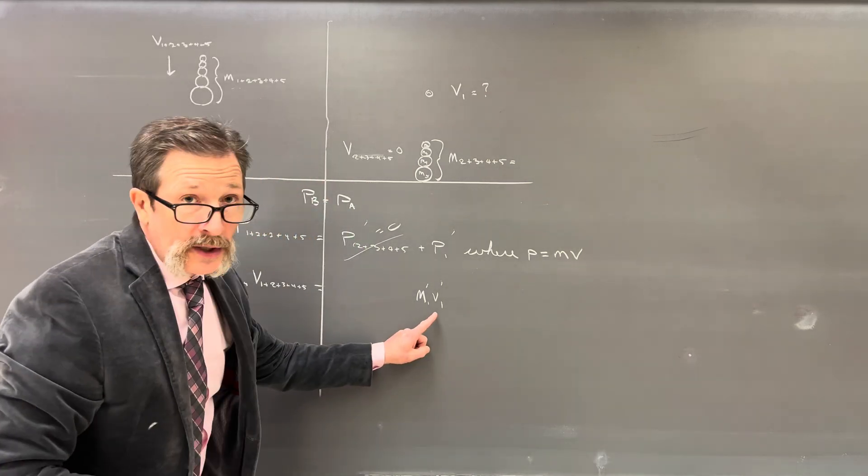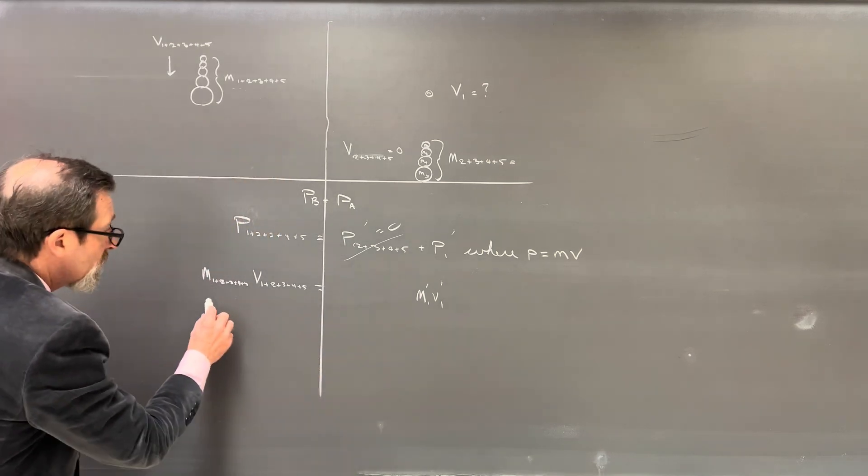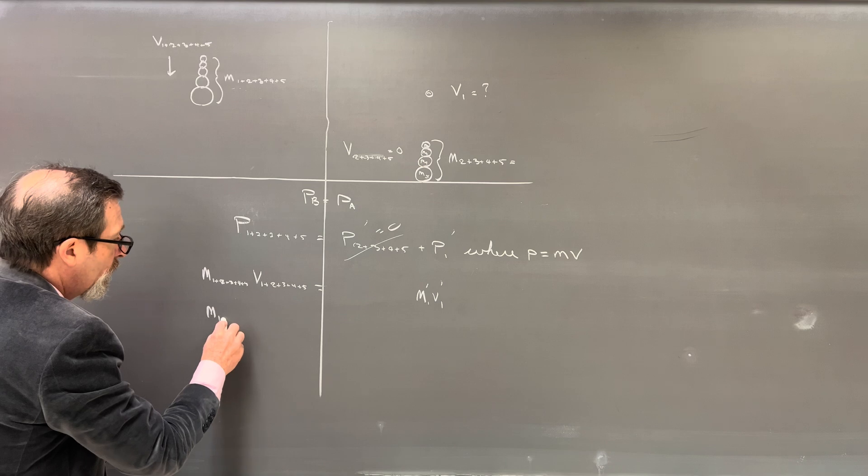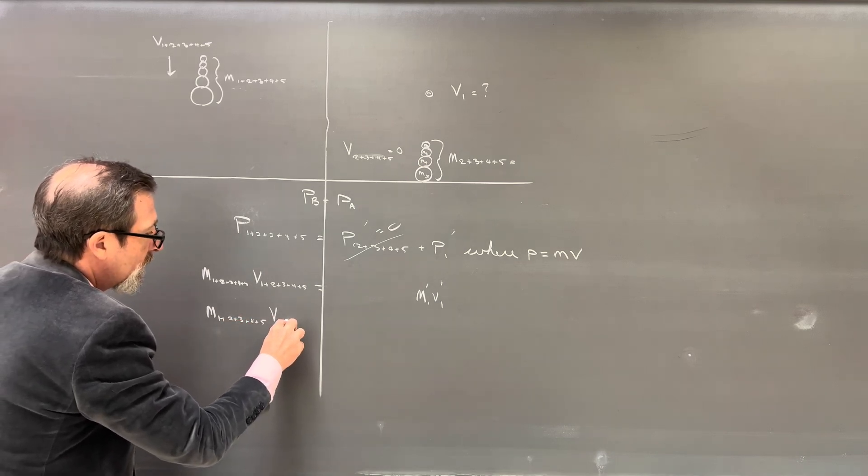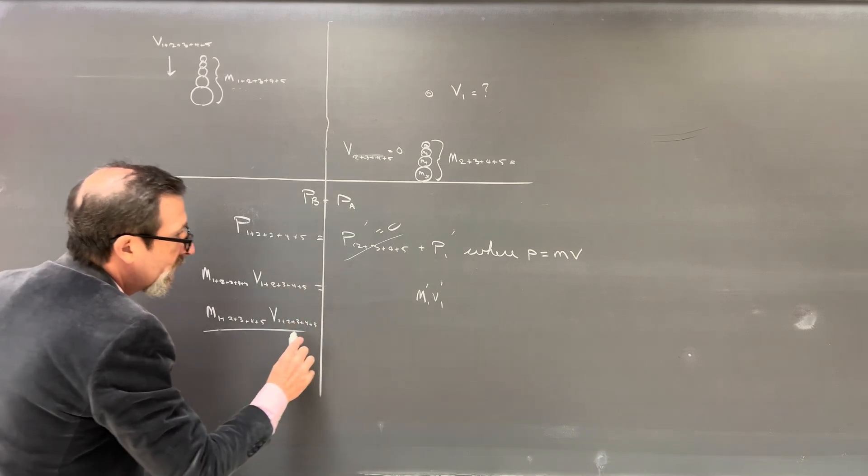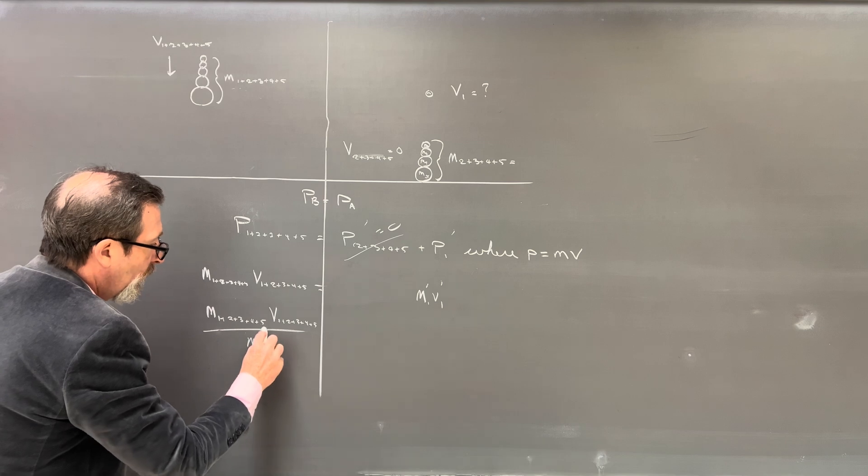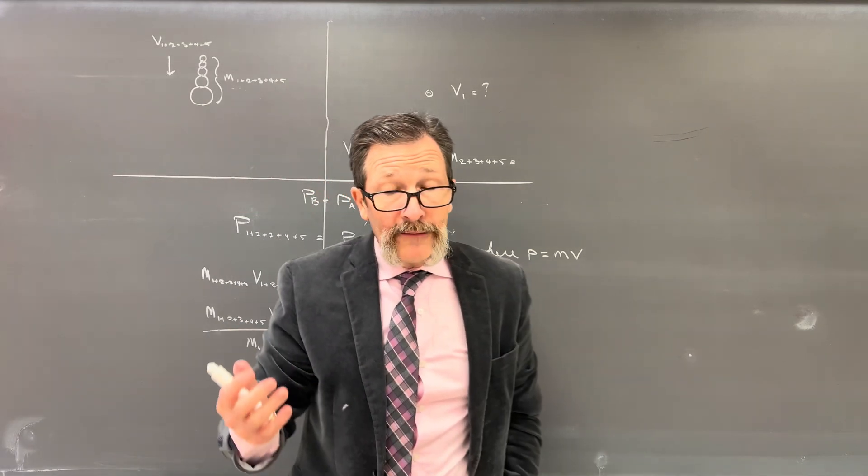So I can just say that 0 and it goes away. So I can end up saying, well, I've got my m1 plus 2 plus 3 plus 4 plus 5 times the velocity of 1 plus 2 plus 3 plus 4 plus 5 must equal, and I only have this object right here that has momentum afterwards, which would be m1 v1, and those are afters. And I should use the little after signs so I can keep track. So if I wanted to solve for v1, all I need to do is divide by m1. So I'll do that. m1 plus 2 plus 3 plus 4 plus 5. V1 plus 2 plus 3 plus 4 plus 5 divided by my mass 1 after, and that will give me my v1 after. We have all the values.